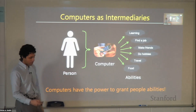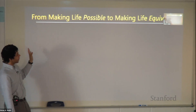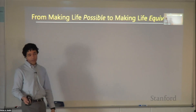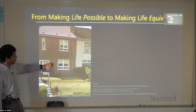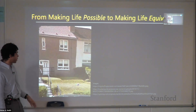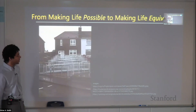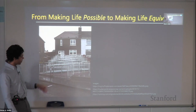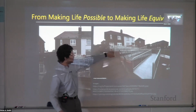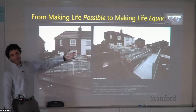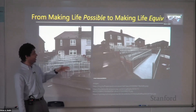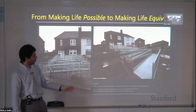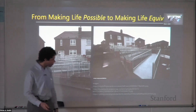Our mantra is from making life possible to making life equivalent. Let me show an example from the physical world. This is a house in Scotland where one of the children needed a wheelchair. The family petitioned the town to install a ramp, and the town finally did — and while this ramp clearly makes it possible to enter and exit the building, going up that ramp is certainly not an equivalent experience to just walking straight up those stairs. The only people who would ever use that ramp are people who have to. And that's a problem.